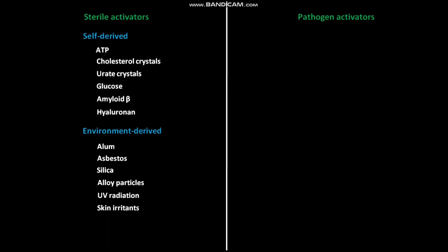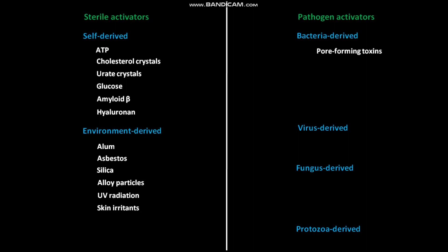The pathogen-associated activators are of four types: bacteria-derived, virus-derived, fungus-derived, and protozoa-derived. The bacteria-derived activators include pore-forming toxins from S. aureus and Clostridia, clozeline, peptidoglycan fragments, RNA, and DNA.